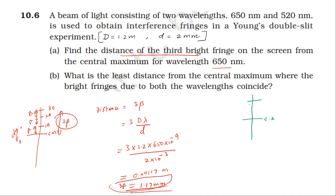For the greater wavelength λ₁, let the number of fringes be n, with fringe width β₁. For the other wavelength λ₂, the corresponding fringe width is β₂. The n-th fringe of the greater wavelength λ₁ coincides with the (n+1)-th fringe of the smaller wavelength λ₂. So we set n × β₁ equal to (n+1) × β₂.